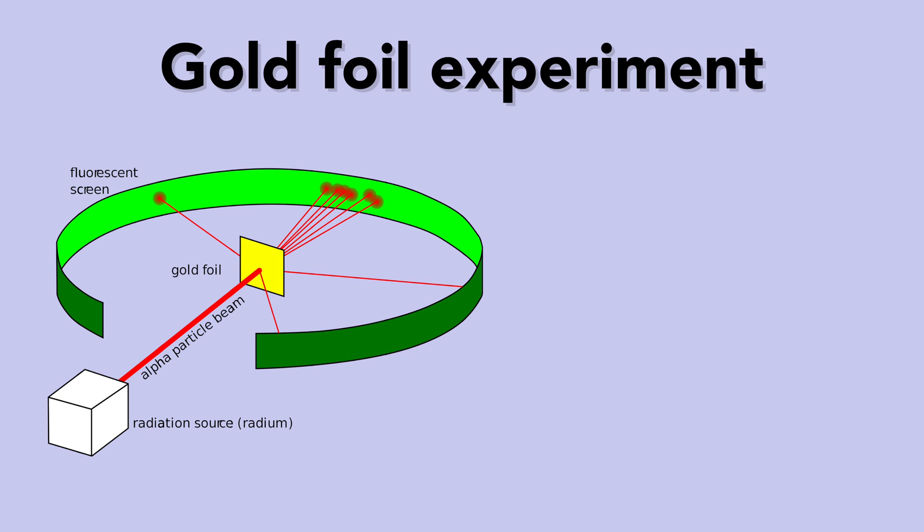This led to two very important observations. Firstly, most of the particles that hit the gold foil went straight through and hit the screen on the opposite side. This indicated that most of the atom was made up of empty space, which allowed the particles to pass through.